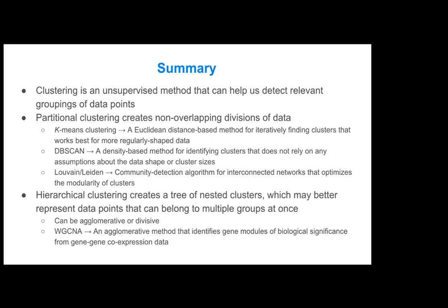We also talked about Louvain and Leiden, which are community detection algorithms. These are more suitable when you have network data or graph-structured data, and these methods optimize the modularity of clusters — essentially the similarity within a cluster and the dissimilarity outside of clusters.